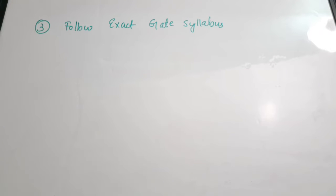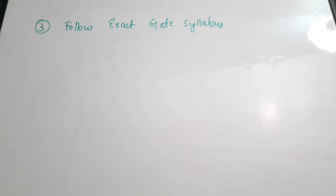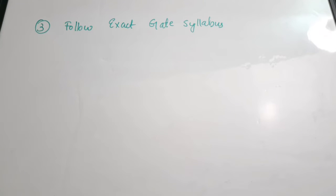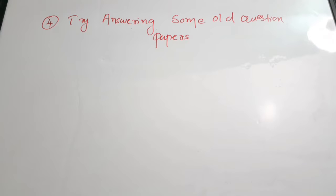The third step is to follow the exact GATE syllabus. When you search online, you'll find many sites listing the syllabus, but they vary. Get the exact syllabus from which questions are set. Studying all topics randomly is not efficient — find the exact syllabus, note it down, and then start your preparation accordingly.